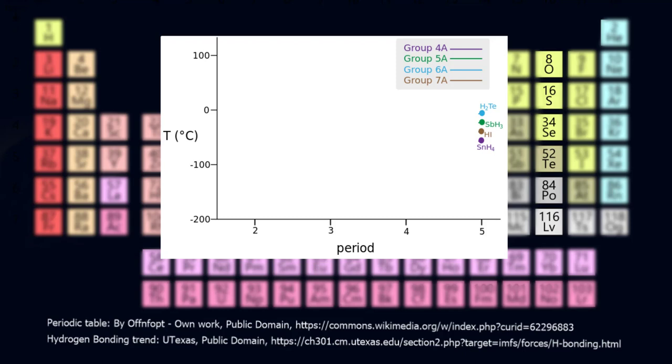I am going to talk about the compounds colored in light blue, all of which are group 6 elements bonded with 2 hydrogen atoms. First, looking at the right hand side of this plot, we start with dihydrogen tellurium, which has a boiling point near 0 degrees.